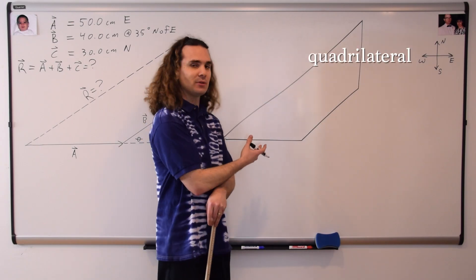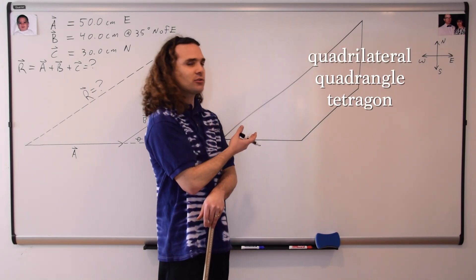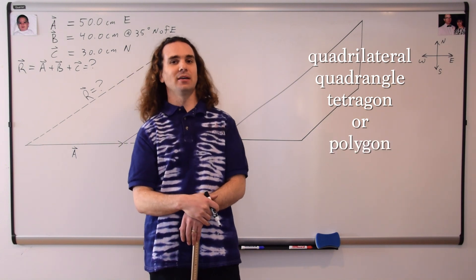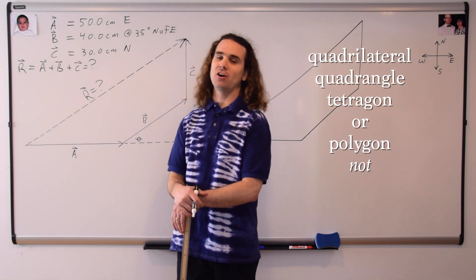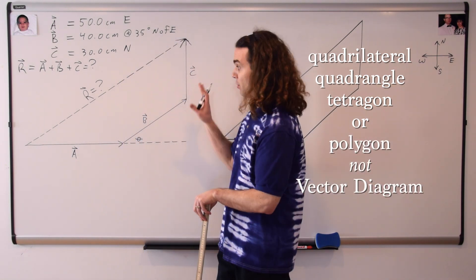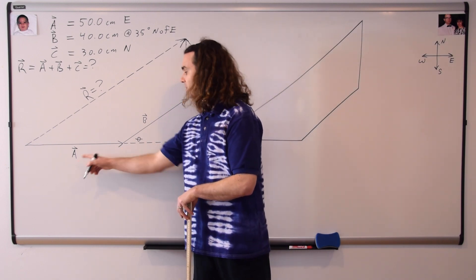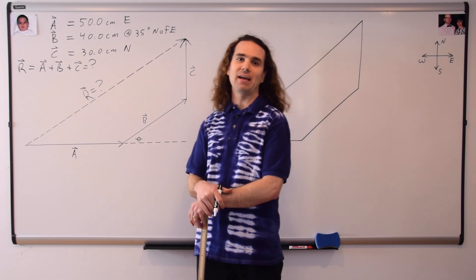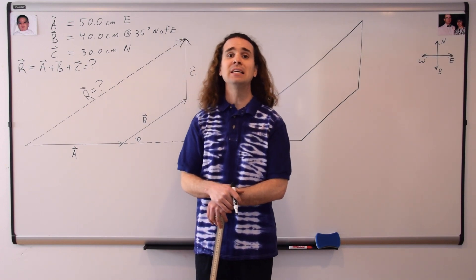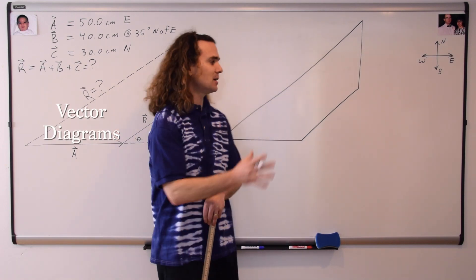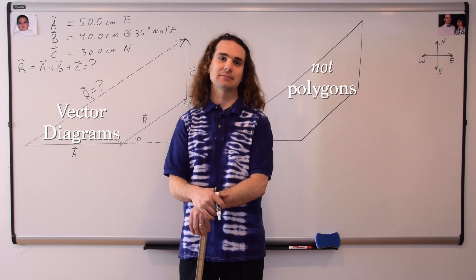Yes, you can call this a quadrilateral, a quadrangle, a tetragon, or even just a polygon. But you certainly cannot call it a vector diagram. This is a vector diagram. Notice, arrows indicating the direction of the vectors, and labels to identify the vector names. Please draw vector diagrams, not polygons.